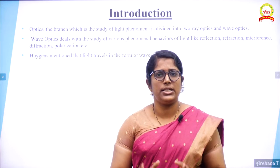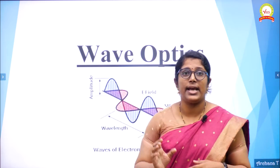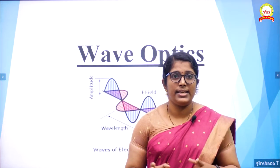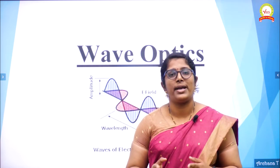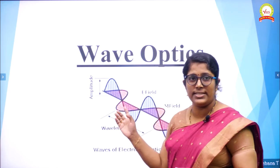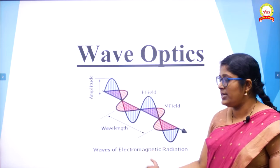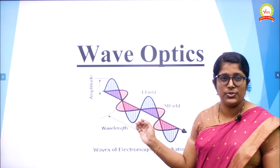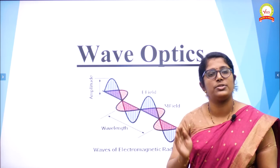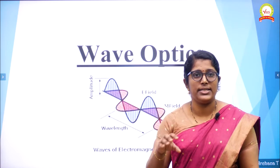Wave optics completely deals with the wave nature of light. We have already studied in electromagnetic waves that light acts as a form of waves. Light has all the properties of a wave, meaning light is an electromagnetic wave according to Maxwell's theory. This is a representation of a wave which is an electromagnetic radiation, with electric field and magnetic field coupled together and transmitting. We already studied about electromagnetic waves in which the wave nature of light is explained.